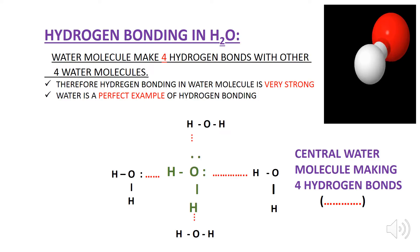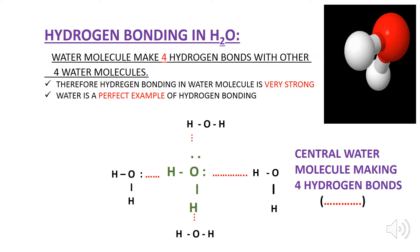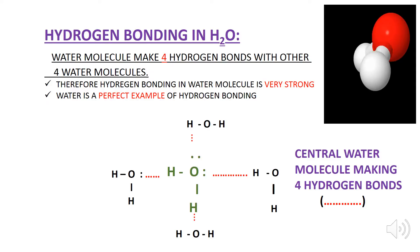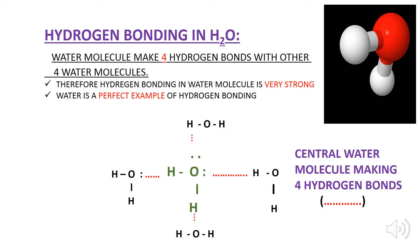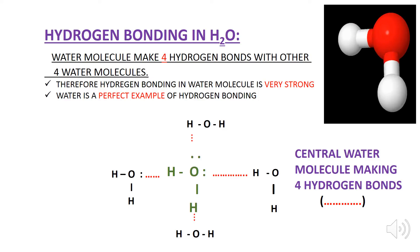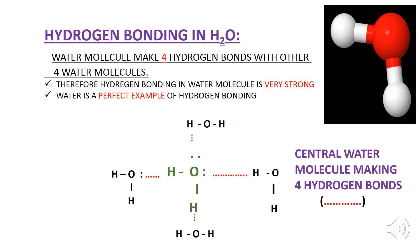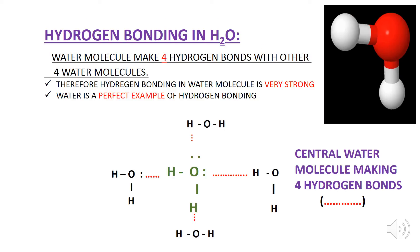The central oxygen, having two lone pairs of electrons in a water molecule, can easily make two hydrogen bonds with other two water molecules. On the other hand, the two hydrogen atoms of the central molecule can also make hydrogen bonds with the oxygens of two other water molecules. In this way, the central water molecule can easily make four hydrogen bonds, making water a perfect example of hydrogen bonding.